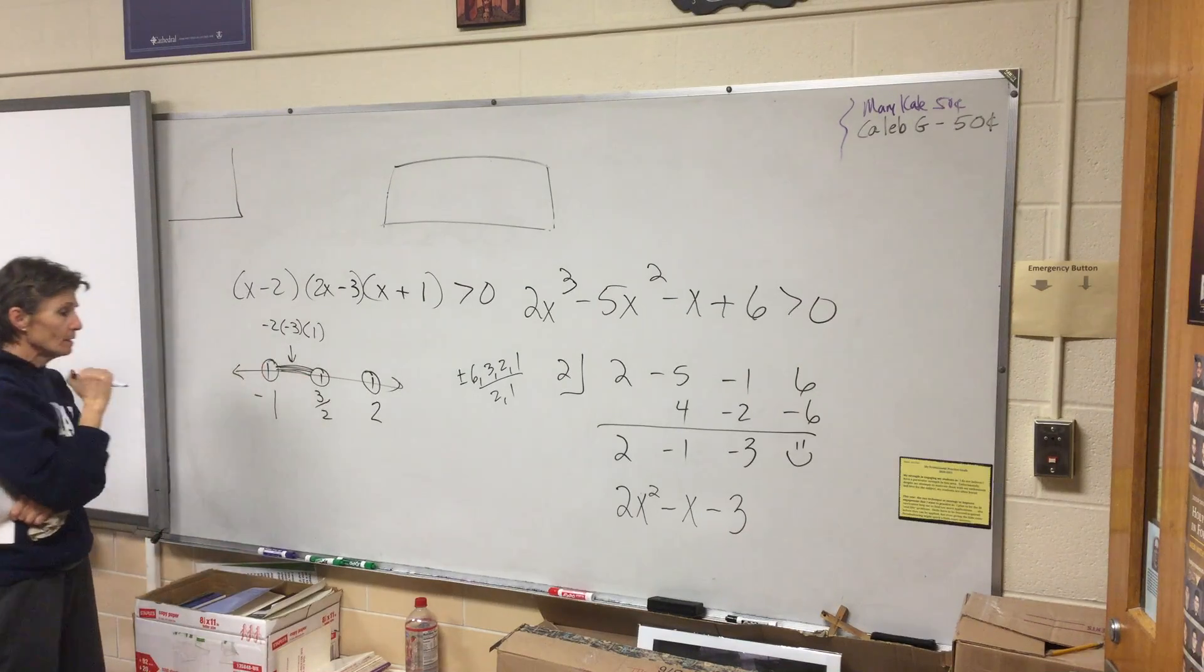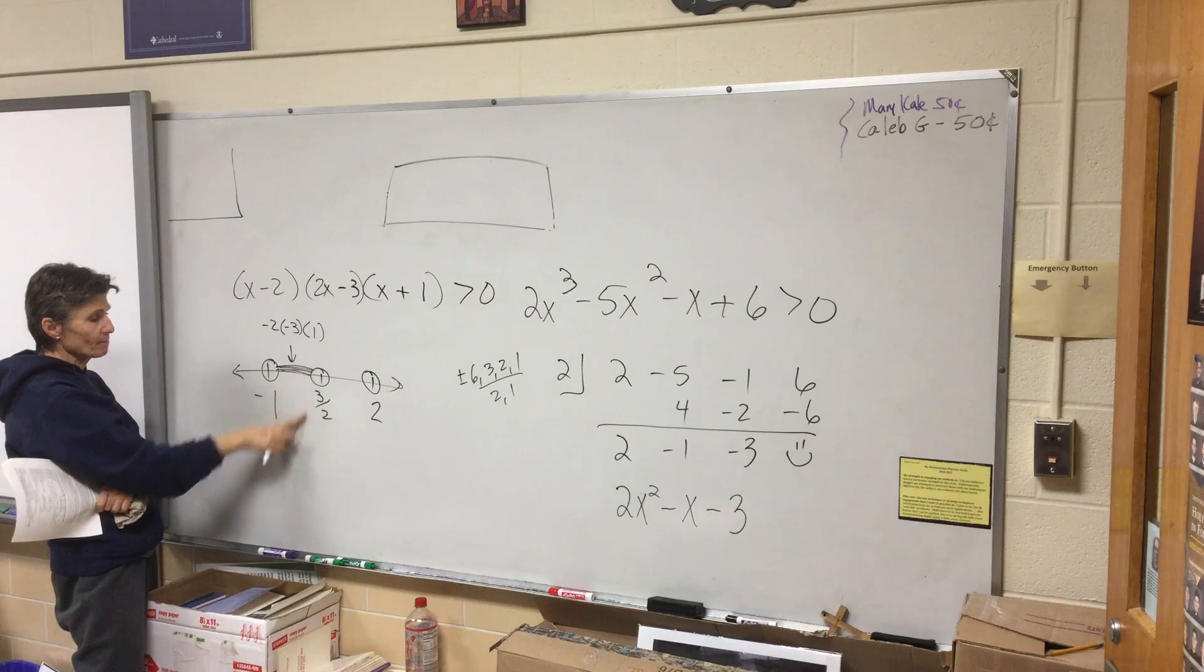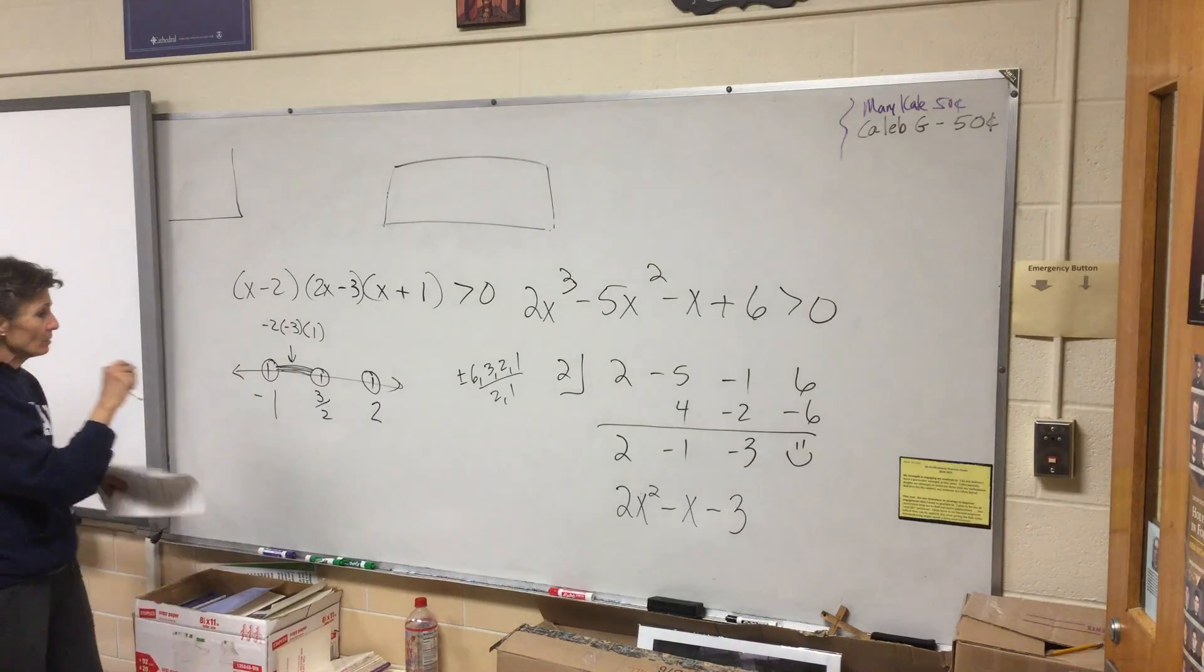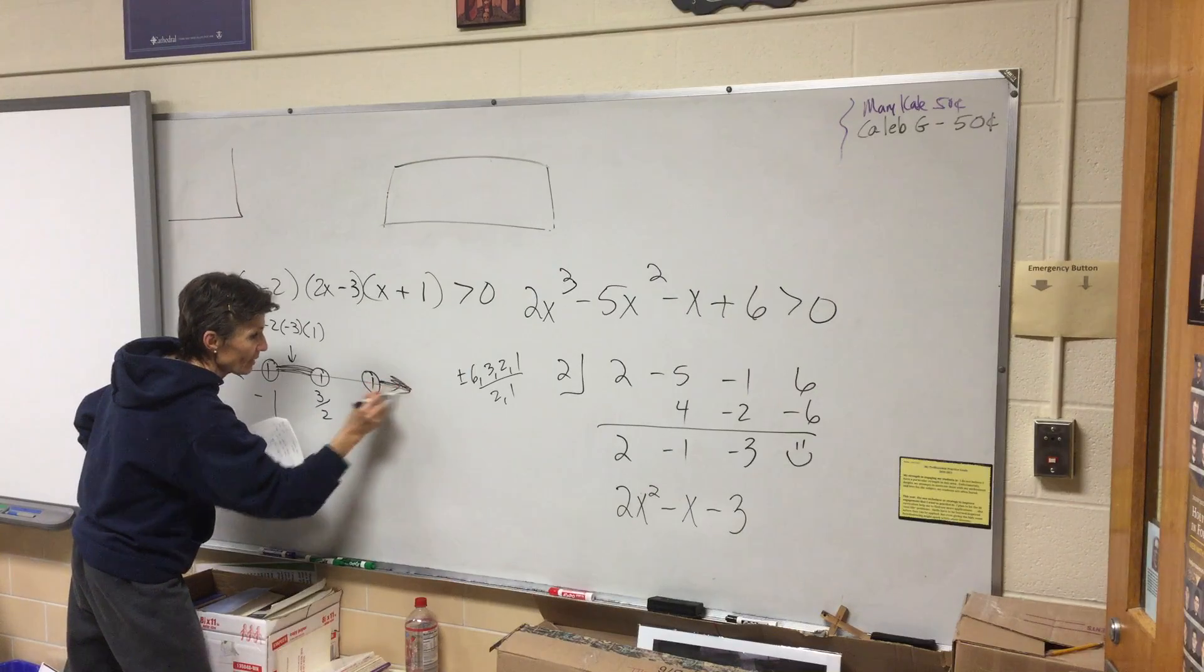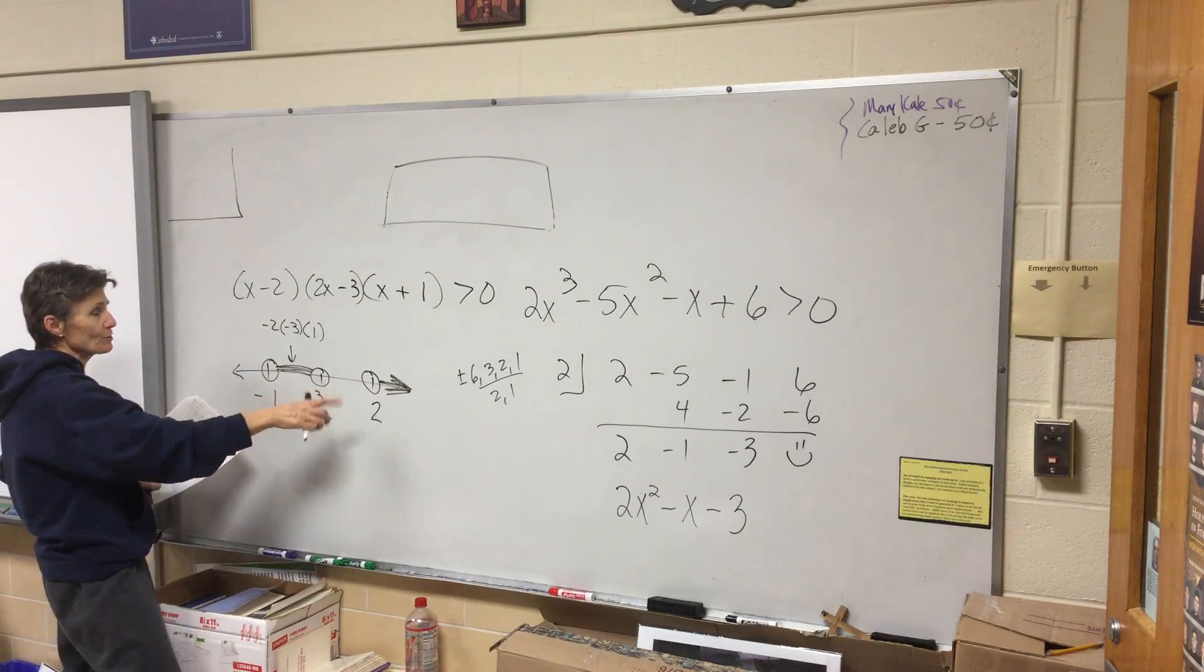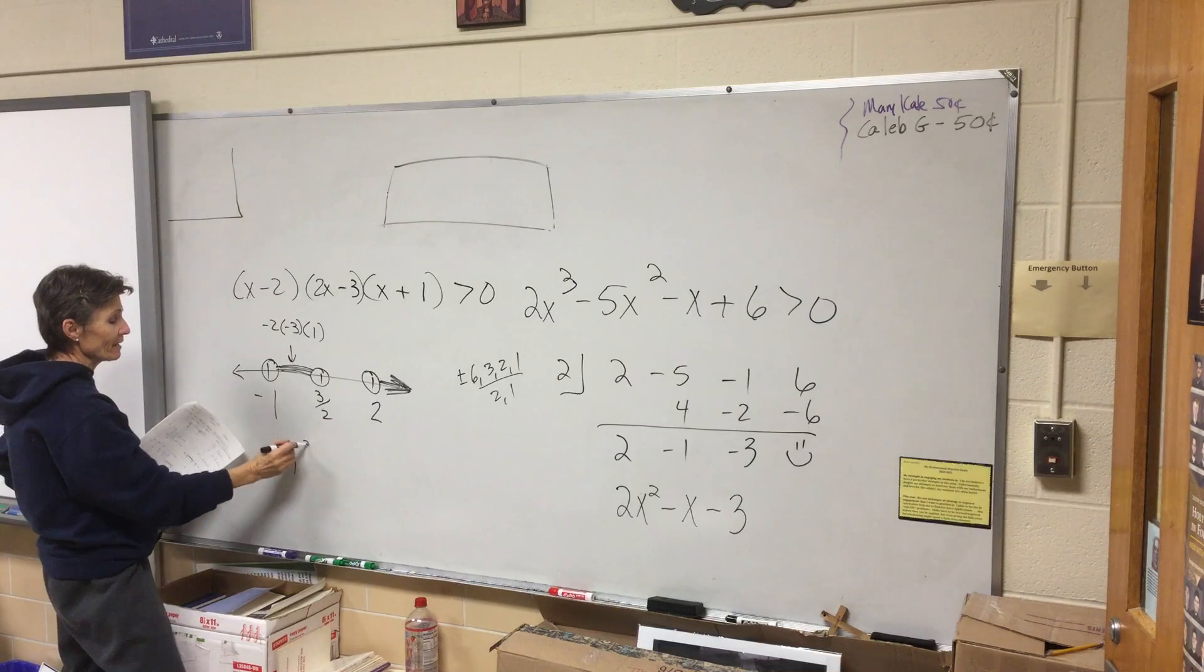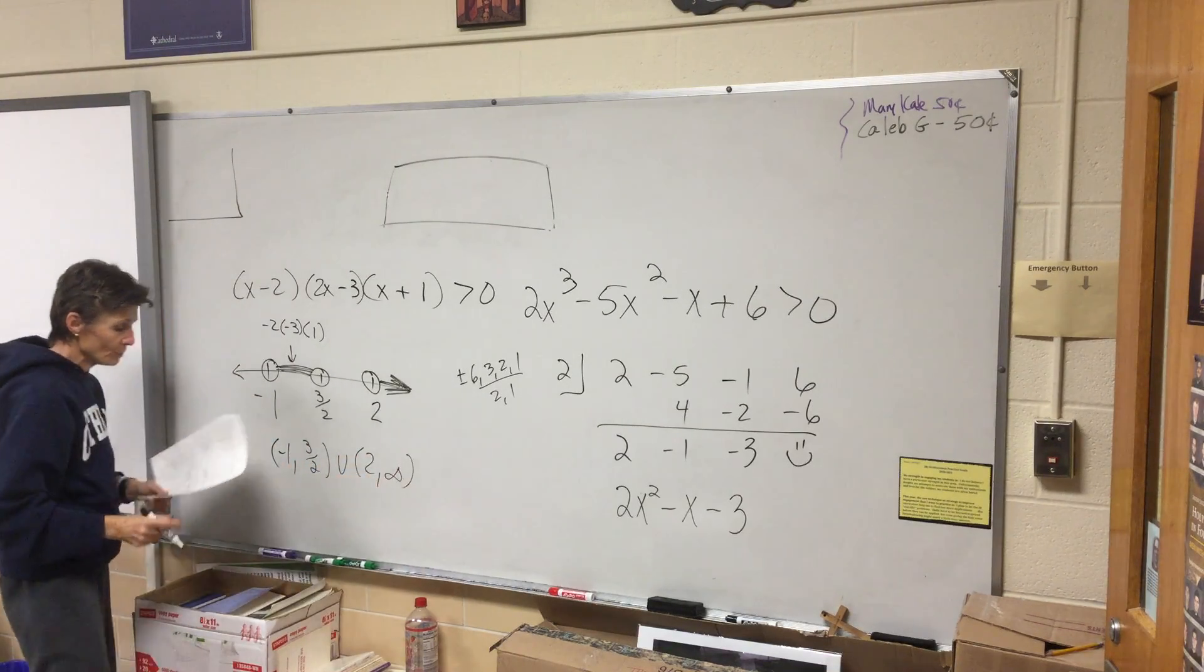Yes. So I shade it. It worked. We checked zero, zero's in this space, it worked, gave me a positive answer. Now if I shaded that one, then I'll also shade this one out here. You're allowed to alternate because you don't have those pesky squares. So my answer is from negative one to three-halves, or from two to infinity.